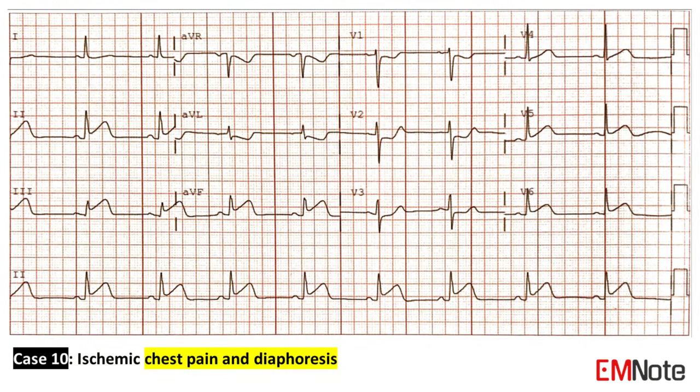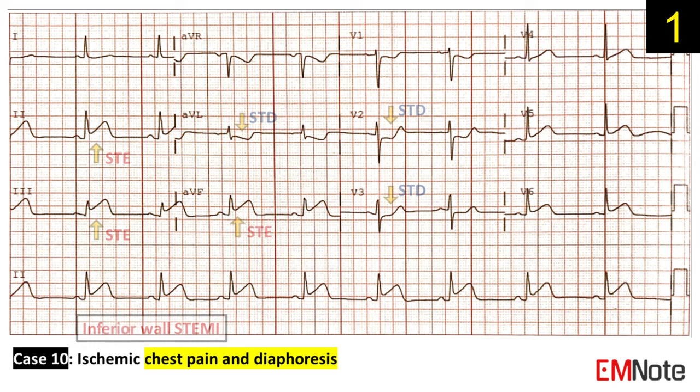Case 10: The patient presents with ischemic chest pain and diaphoresis. The ECG shows inferior wall STEMI.